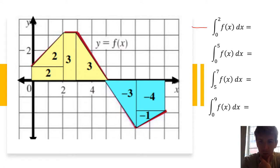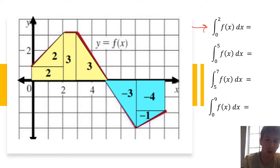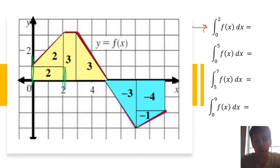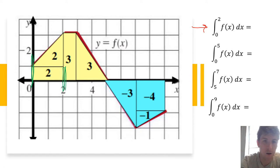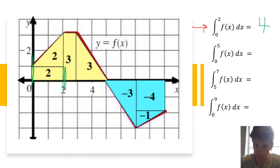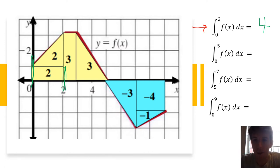This first one: the integral from 0 to 2 of f of x dx. Looking at our function, here's x = 0 and here's x = 2. Remember, limits of integration refer to x values. The area between the curve and the x-axis from 0 to 2 is just 2 plus 2, so the integral from 0 to 2 equals 4. If that feels too easy, it's meant to be.